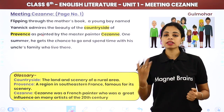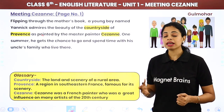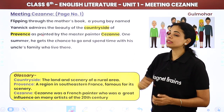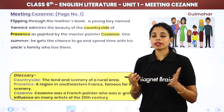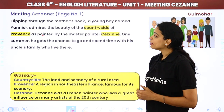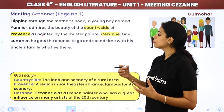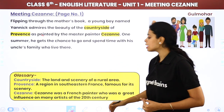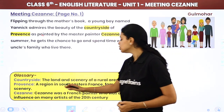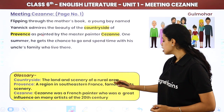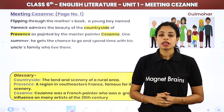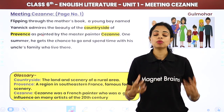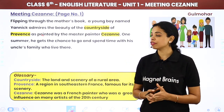The boy named Yannick, while flipping through his mother's book, found pictures of the countryside of Provence. Provence is a region in southeastern France, famous for its scenery. The countryside refers to the land and scenery of a rural area — where you see many trees, rivers, and mountains.